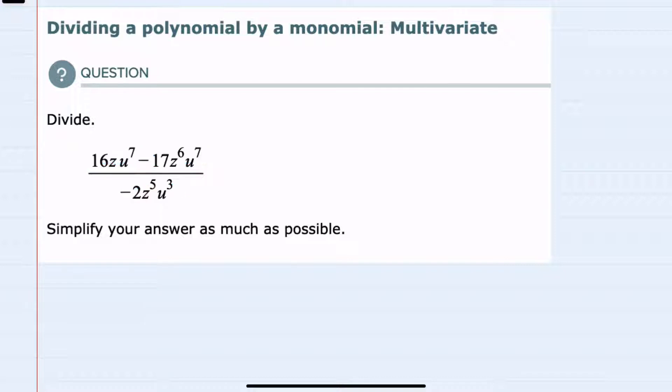So we can start the simplification process by separating this out and writing it as that first term over the denominator, 16VU7 over negative 2Z5U3. I'll use the minus here and then write that second term, 17Z6U7 over that same denominator.